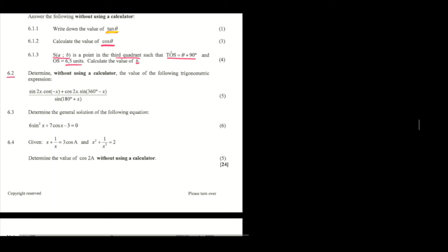We are going to solve 6.4. We are told that given the expression (x + 1/x) equals 3cos(a), and x² + 1/x² equals 2, you need to determine the value of cos(2a) without the use of a calculator.